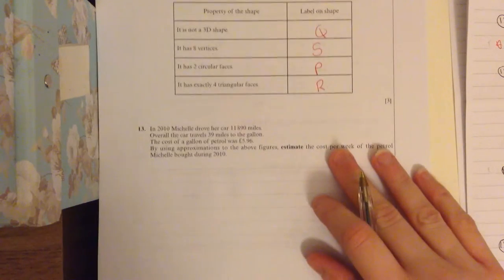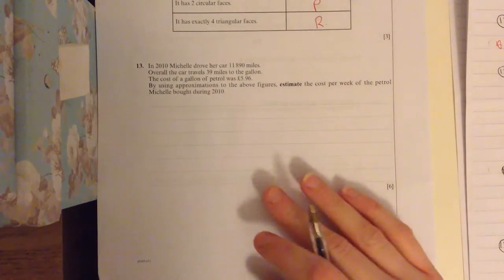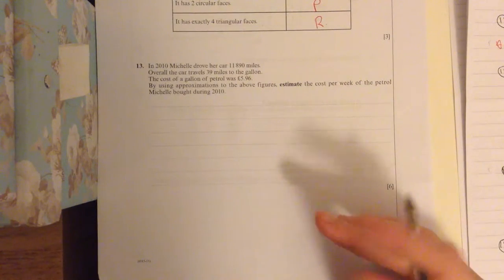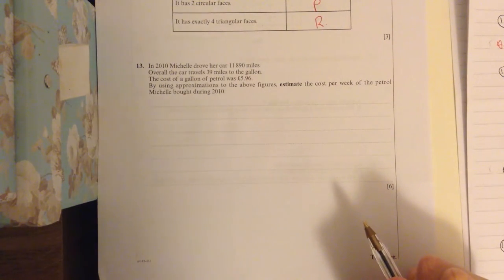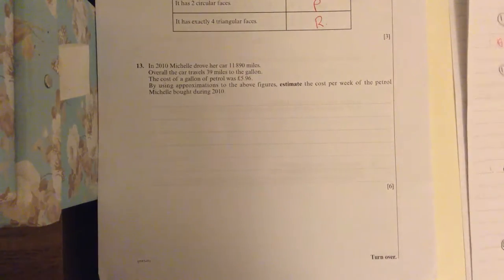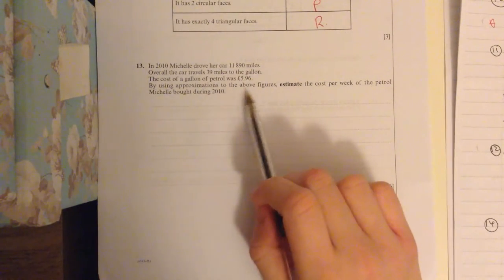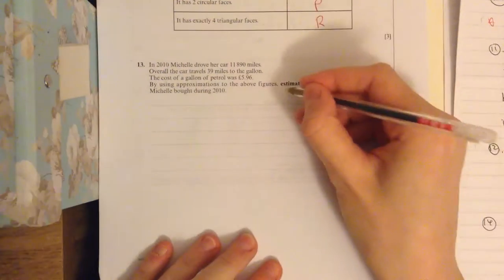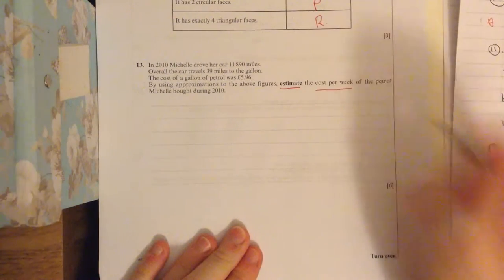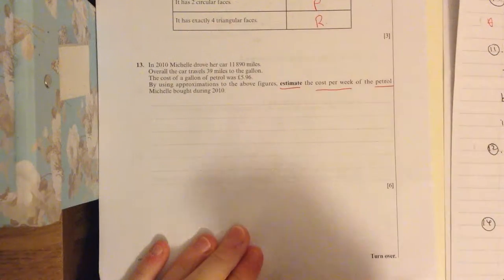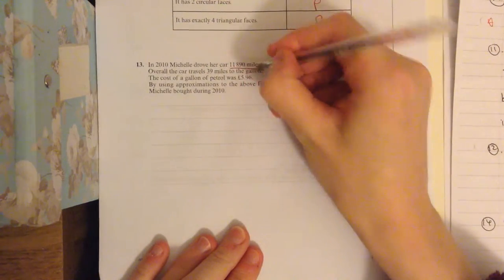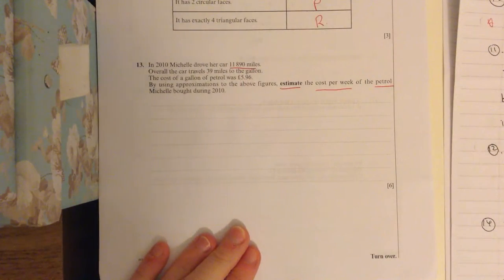Okay, question 13. It says, in 2010, Michelle drove her car 11,890 miles. Overall, the car travelled 39 miles to the gallon. The cost of a gallon of petrol was £5.96. By using approximations, estimate, that's the key word, estimate the cost per week of the petrol. So she drove 11,890 miles.